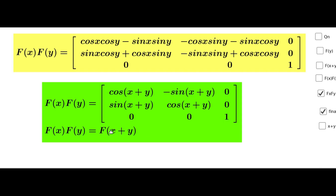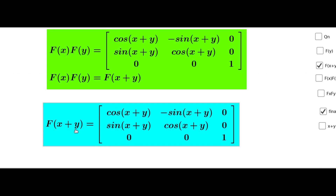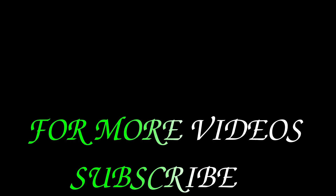That is equal to f of x plus y. We have the result f of x plus y equal to matrix [cos(x+y), -sin(x+y), 0; sin(x+y), cos(x+y), 0; 0, 0, 1], which equals f of x into f of y. Therefore, we can say that f of x into f of y equal to f of x plus y. Thank you.